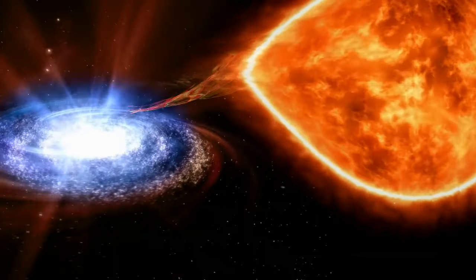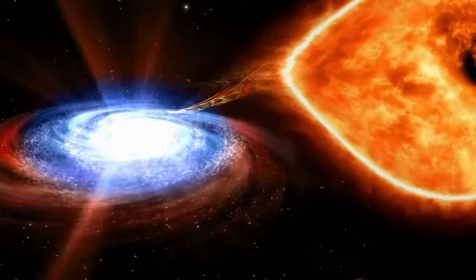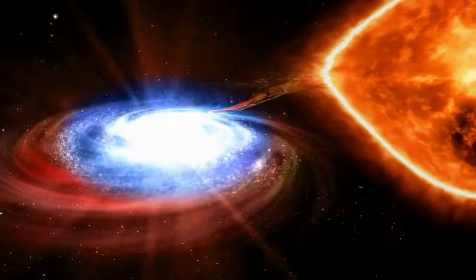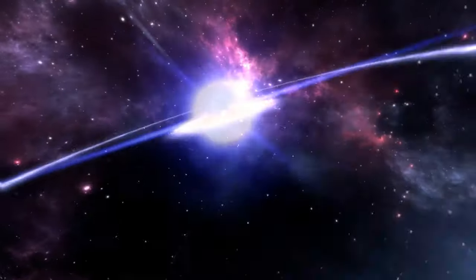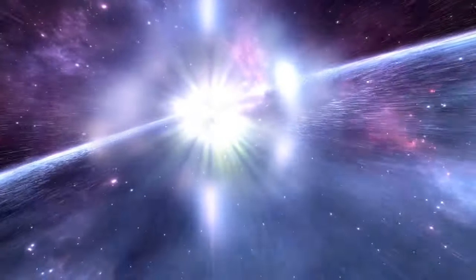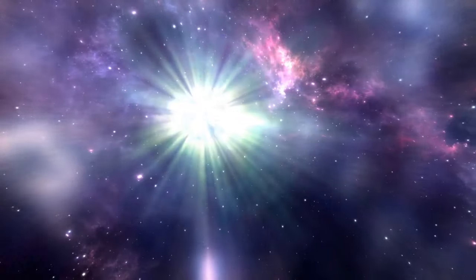Binary star systems are type 1a supernova. Explosions occur when the matter from one star is pulled away into the other, usually a white dwarf. Eventually, the white dwarf explodes, producing a supernova of epic proportions.